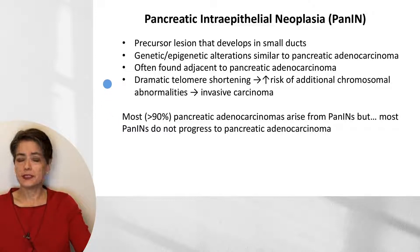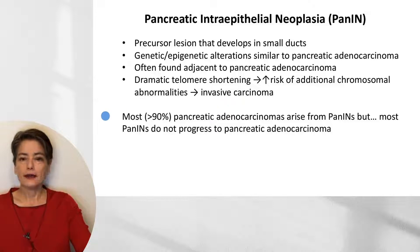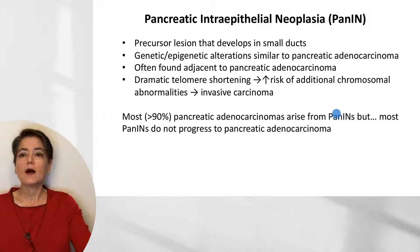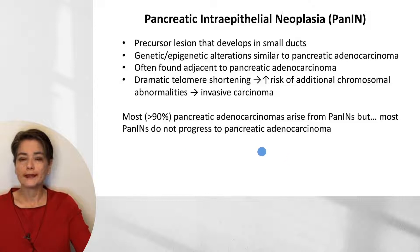A key characteristic of PanIN is very dramatic telomere shortening, which increases the risk of additional chromosomal abnormalities and progression to invasive carcinoma. Importantly, while most pancreatic adenocarcinomas arise from PanIN, most PanIN lesions do not progress to malignancy — a pattern also seen in cervical and breast precursor lesions.